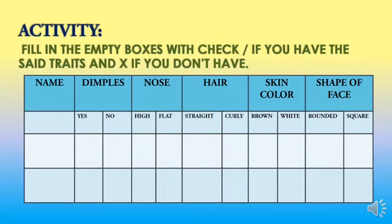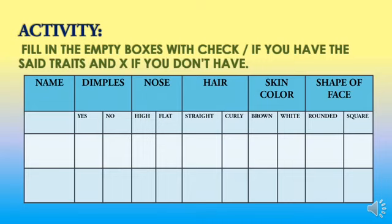Now let's go to skin color. Put a check if you have a brown skin color, and an X if you have a white skin color. Now let's go to the shape of face. We have rounded and square. Put a check if you have a rounded face, and an X if you have a square face.